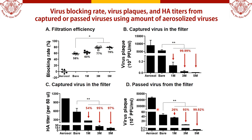First, the efficiency of the coated filter was tested using a high concentration of Hong Kong virus. As the coating concentration increased, the filtration efficiency also increased. In viral plaque assay, the acid titer was decreased. In particular, virus infectivity was found to be reduced by 99% in both the virus captured in the salt-coated filter and the virus passed through the salt-coated filter.